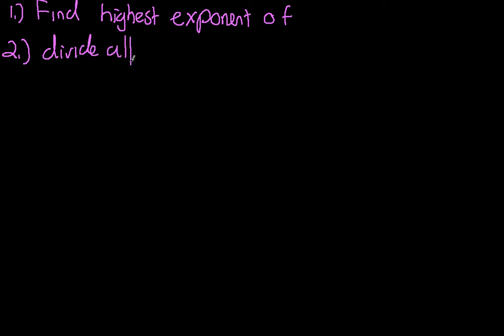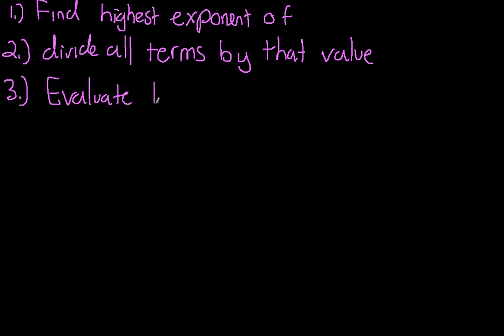So if we recall before, the steps for finding horizontal asymptotes. Step 1, find highest value of x, or find the highest exponent of x. Step 2, divide all terms by that value. Step 3, evaluate the limits as x approaches infinity and as x approaches negative infinity.